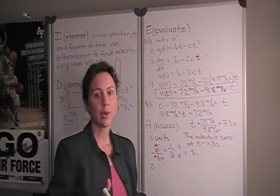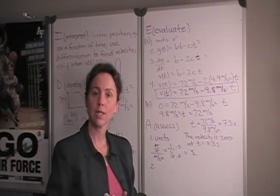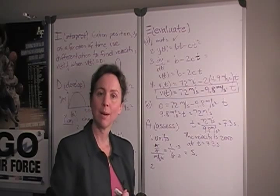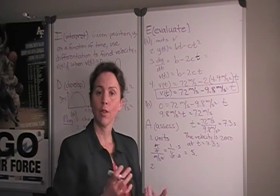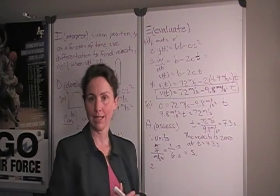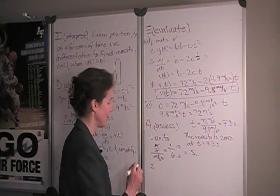If we approximate the acceleration due to gravity as 10 meters per second squared, we can estimate about how long it would take for the velocity to reach zero from that initial 72 meters per second. So, we're going to consider the initial velocity over the acceleration due to gravity.